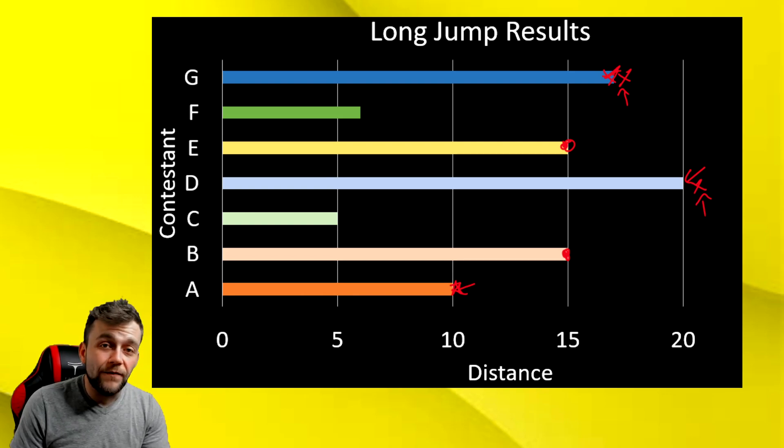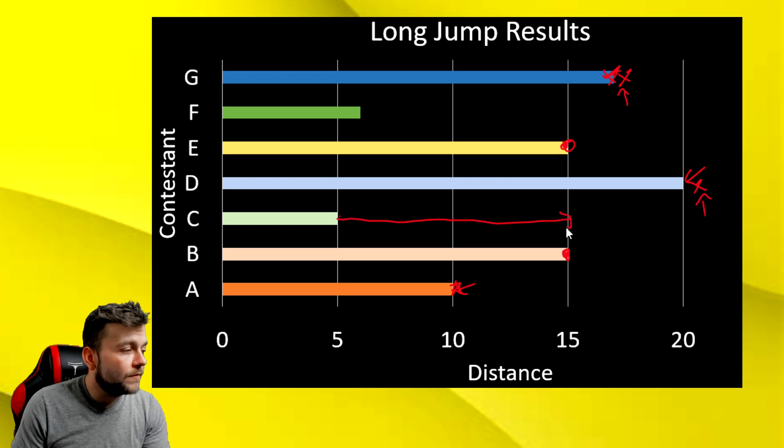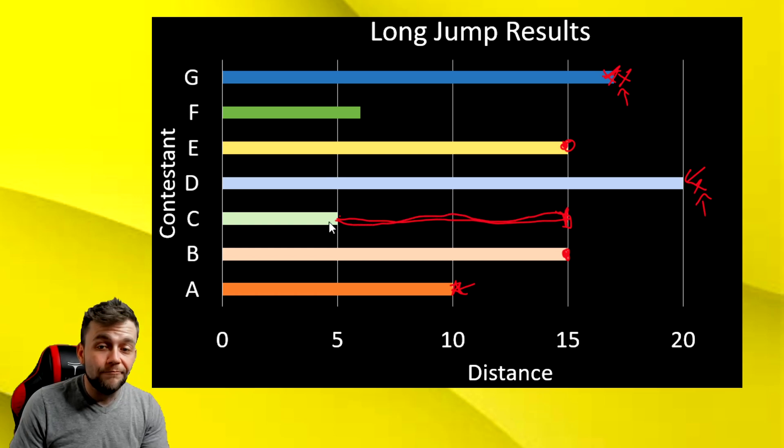Contestant C only jumped 5 feet. So, if you tripled 5 feet, how far did you go? Well, you have now successfully long jumped all the way out to 15 feet. So, you are now tied with contestant E and contestant B. There we go.